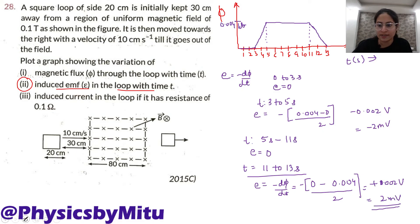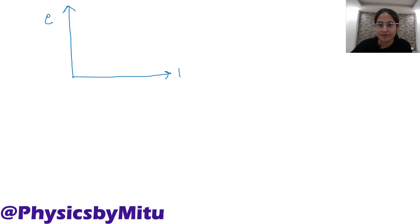Plot the graph, EMF versus time. 0 to 3 seconds, no EMF. Then 3 to 5, minus 2 millivolt. This is minus 2 millivolt. And 5 to 11, no EMF. 11 to 13 plus 2 millivolt.